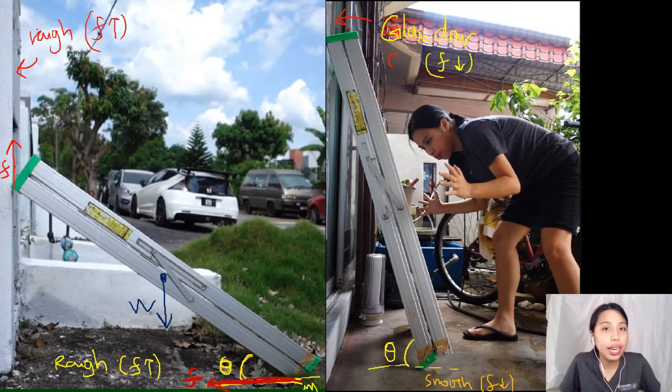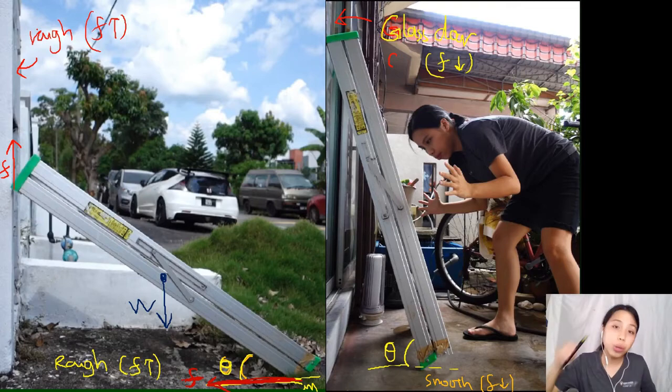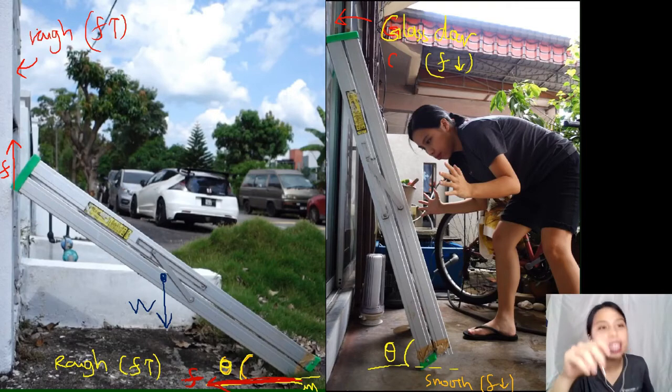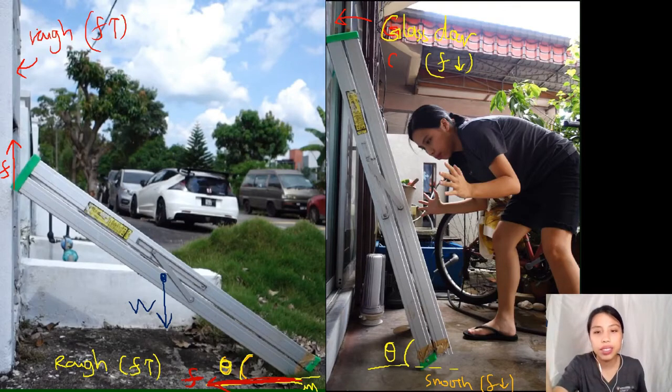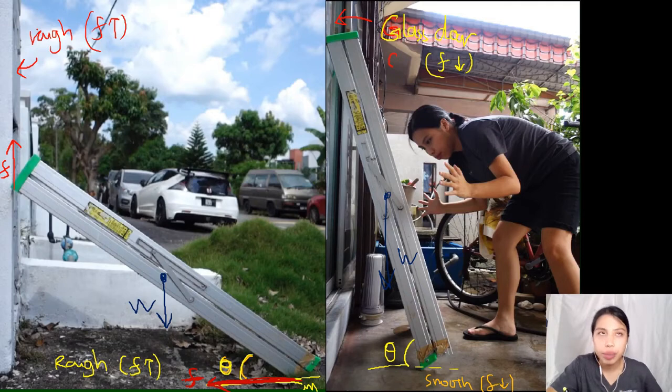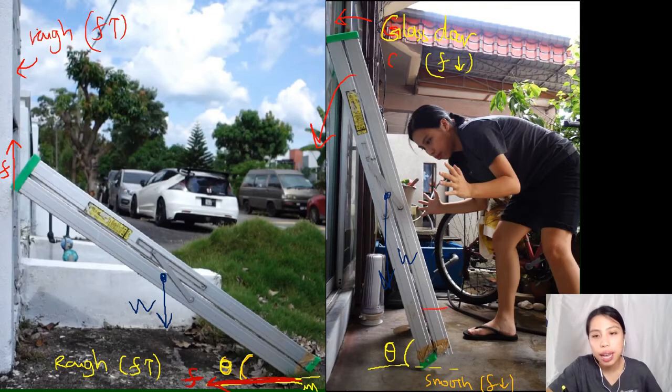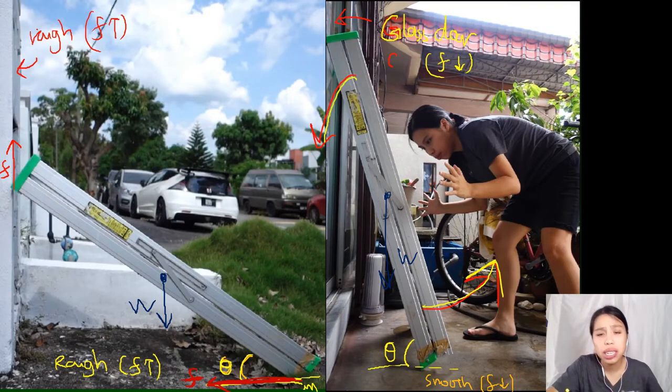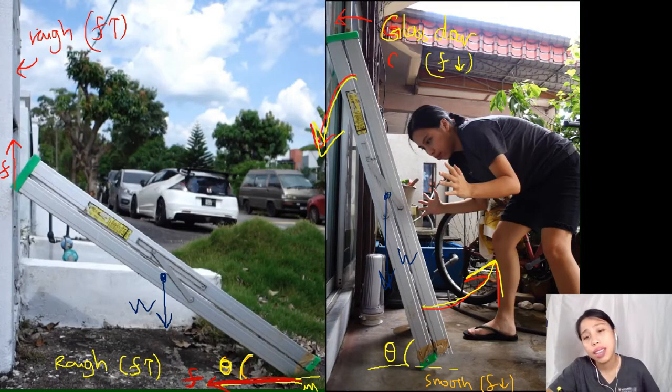And at the bottom, where the grass and the rough road and everything is, it's got a huge frictional force. Huge frictional force holding it this way. So this frictional force will create a torque that will balance out all the other forces that want to cause the ladder to do this. In the next slide, we're going to look at all the forces at play.